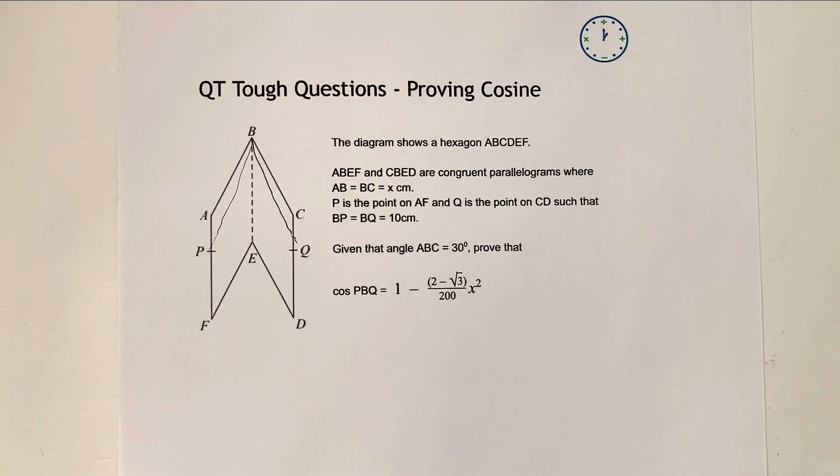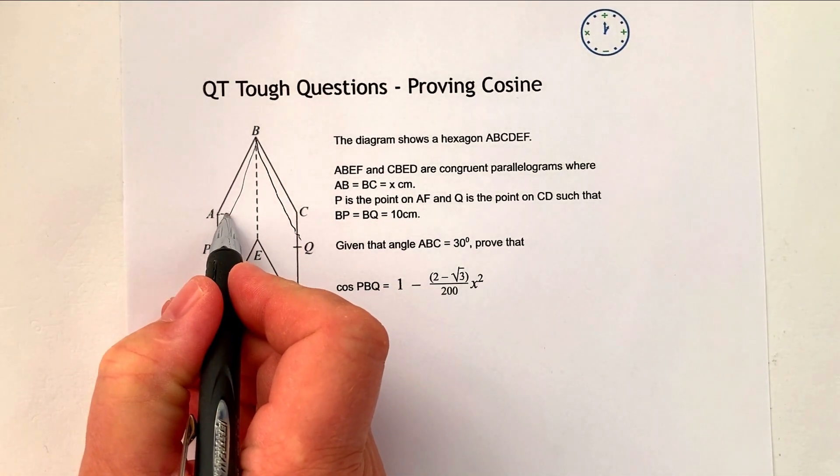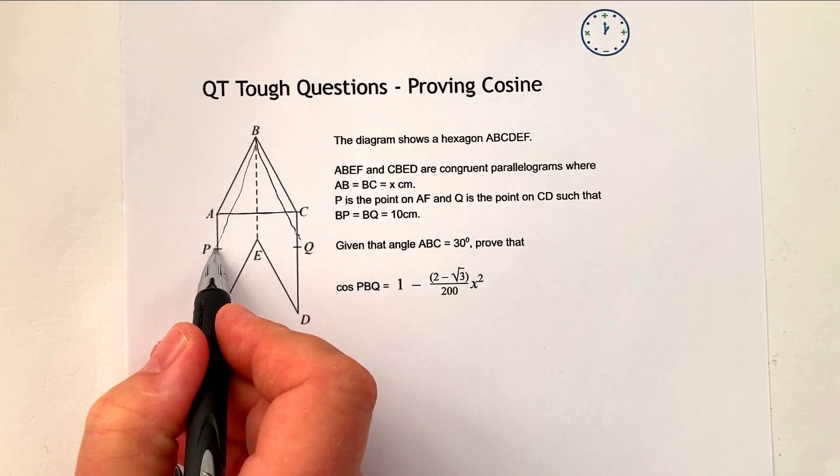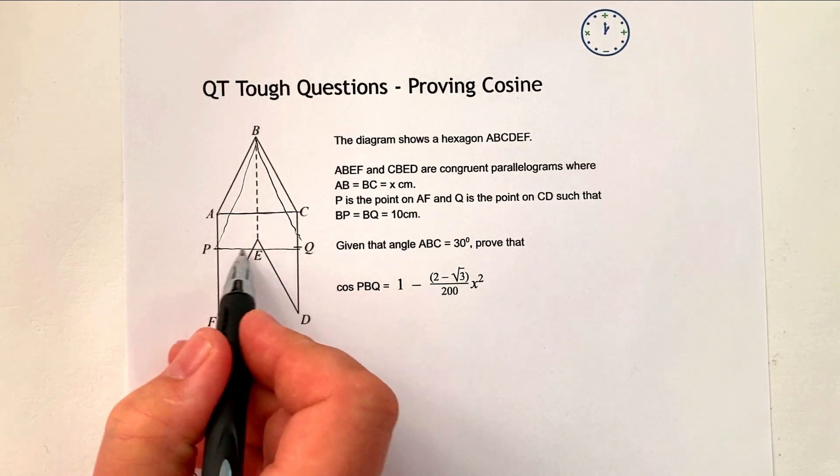Okay, so a couple of things with the actual sketch itself. What I need to do, I think, is recognize that AC, which is this line along here, is exactly the same as PQ.